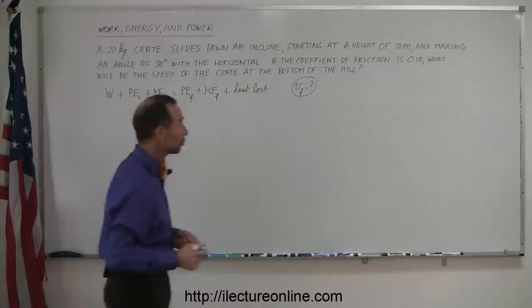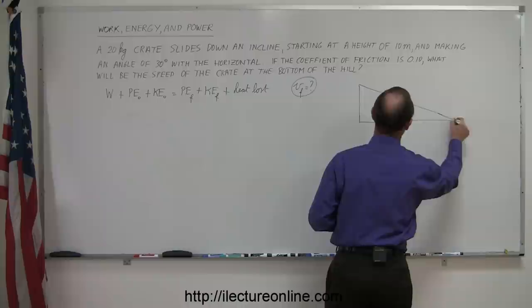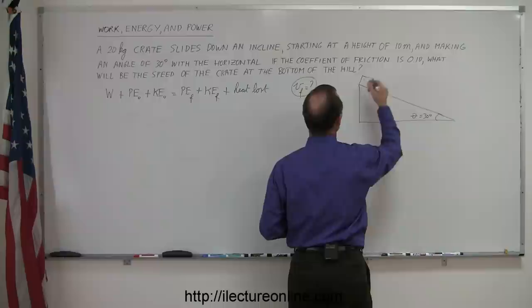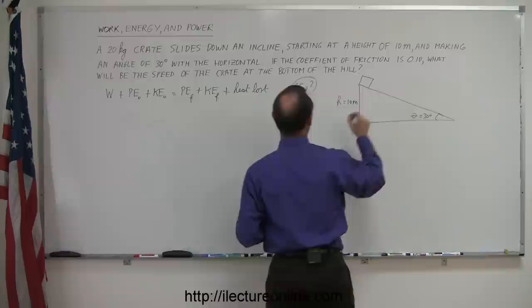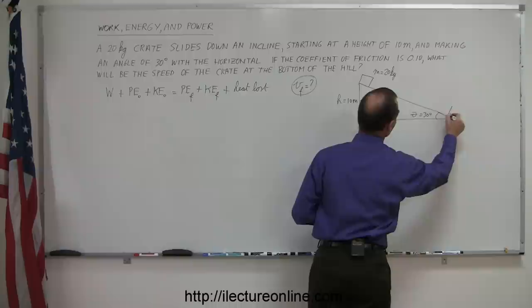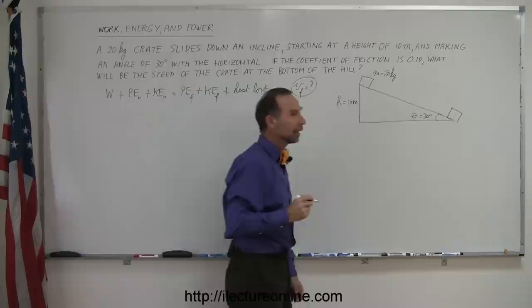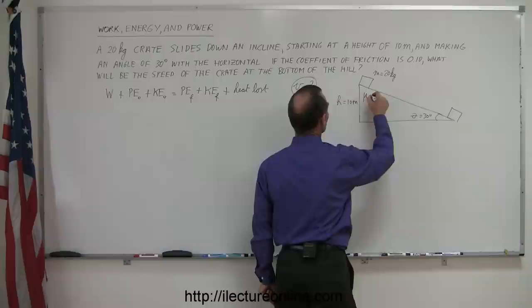Let's say we have an incline. The incline makes an angle of theta equal to 30 degrees. The crate starts at the top of the incline, the height is equal to 10 meters, the crate has a mass of 20 kilograms, and it's going to slide all the way down to the very bottom. We do have friction, so mu is equal to 0.1.